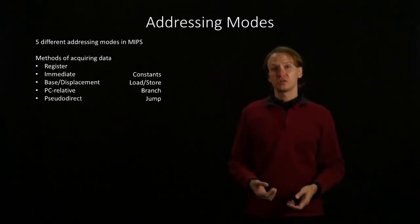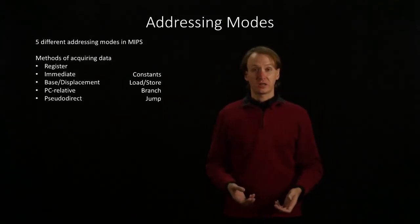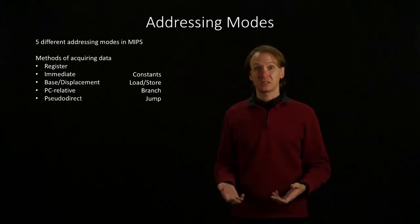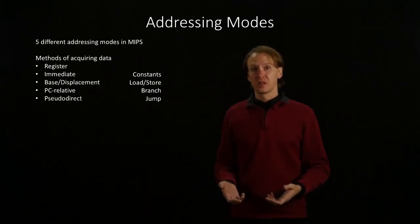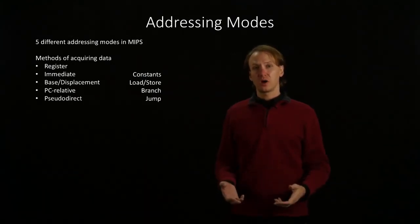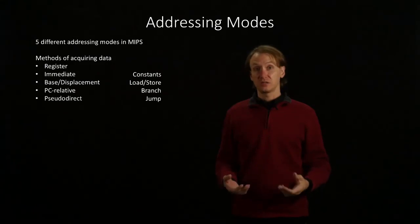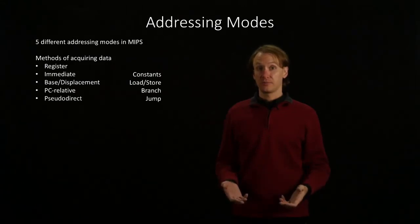The jump instruction uses pseudo direct addressing. It's not quite direct because we had to drop six bits from our address, but otherwise it's capable of directly placing an address into the program counter.